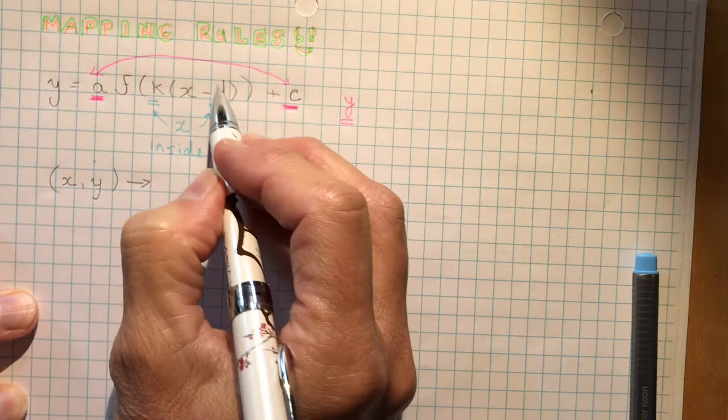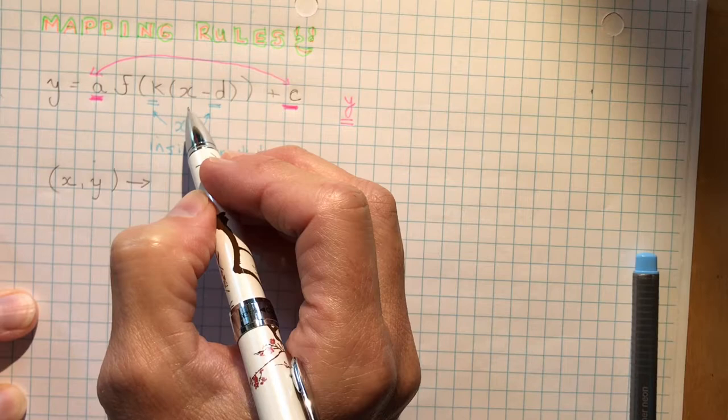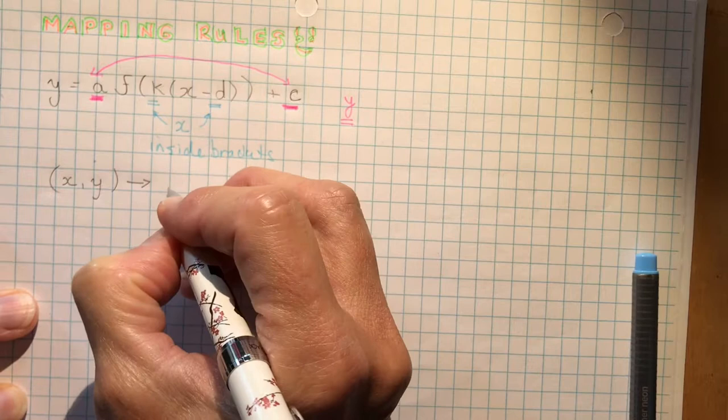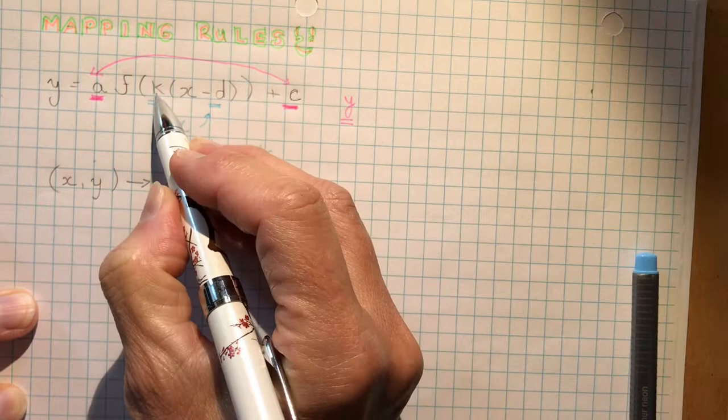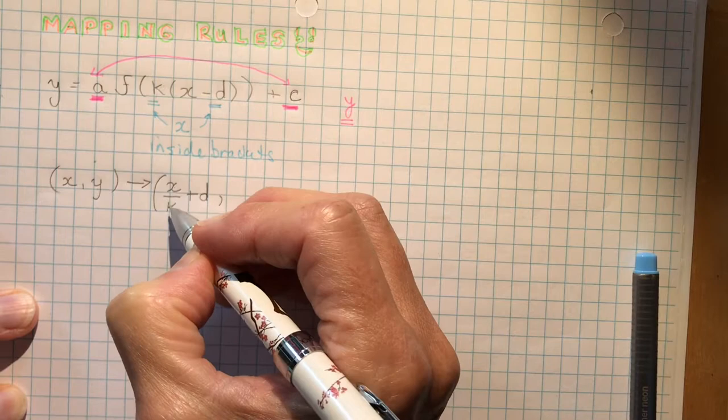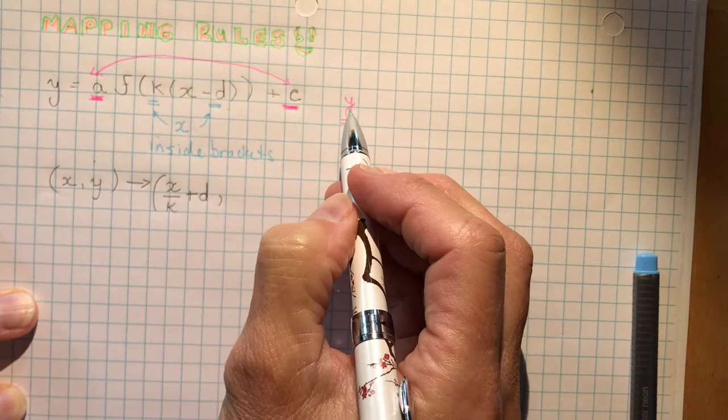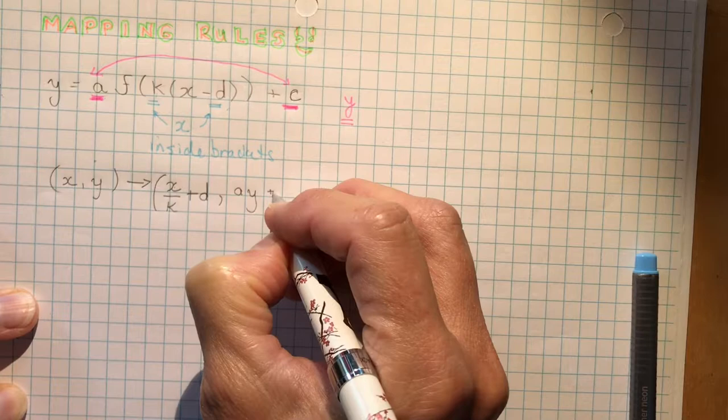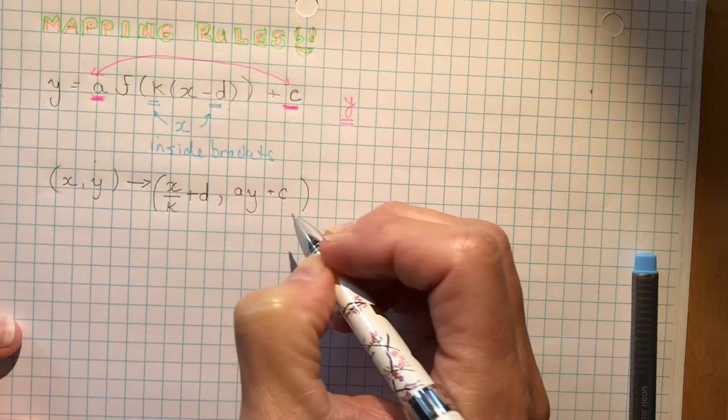Now remember that everything to do with X is backwards to what you would logically think it should do. It says K here, K times this stuff, so we divide the X by K. Just believe me, X's are weird. We divide by K, it says minus D, we're going to add D. The explanation you can see back in the previous lesson. So we divide the X by K, we add D. Y's are normal. X's are weird, Y's are normal. Because Y is normal, I do A times the Y, and I add the C, whatever the C value is. It could be positive or negative.